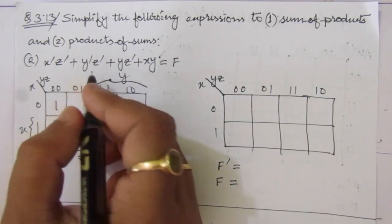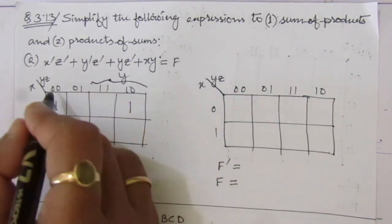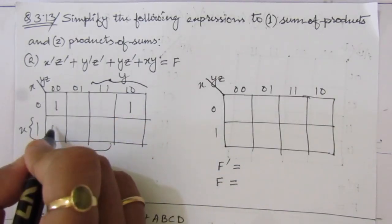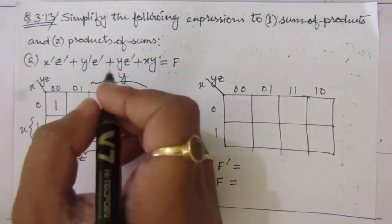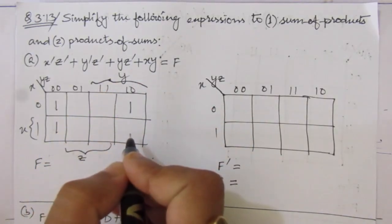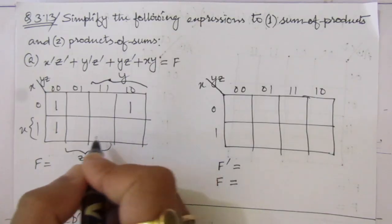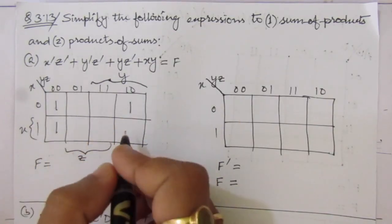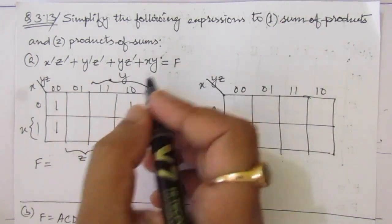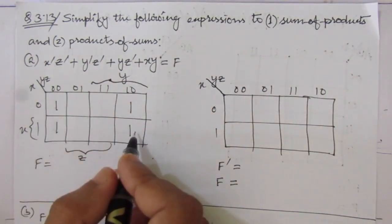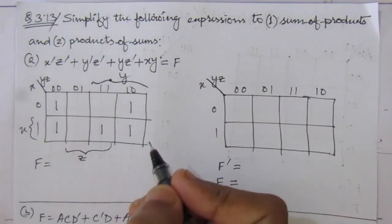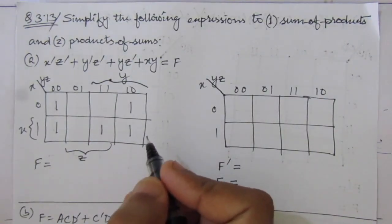Then we have y-bar z-bar. y-bar is the first two columns and z-bar is the first column and the fourth column, so the common column is the first column, so we'll put here one. The third term is y z-bar: y is the third and fourth column, and z-bar is the first column and the fourth column, so we put here one. Then we have x y: x is this row and y is these two columns, so we'll put here one. This is the three-variable map.